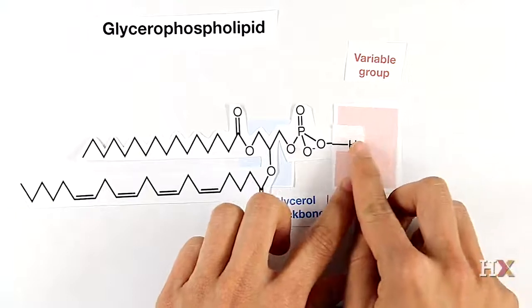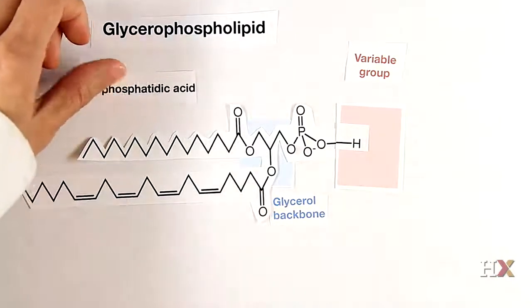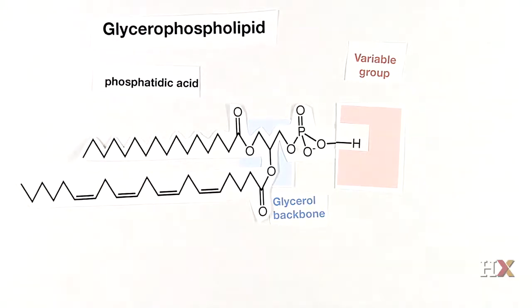The glycerophospholipid with the simplest head group is known as phosphatidic acid. All other glycerophospholipids are derivatives of this.